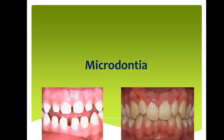So what is microdontia? When all the teeth are small, we call it generalized microdontia. When certain teeth are small, we call it localized microdontia. For example, here we have the lateral incisor smaller than the central incisor, so we call it localized microdontia.